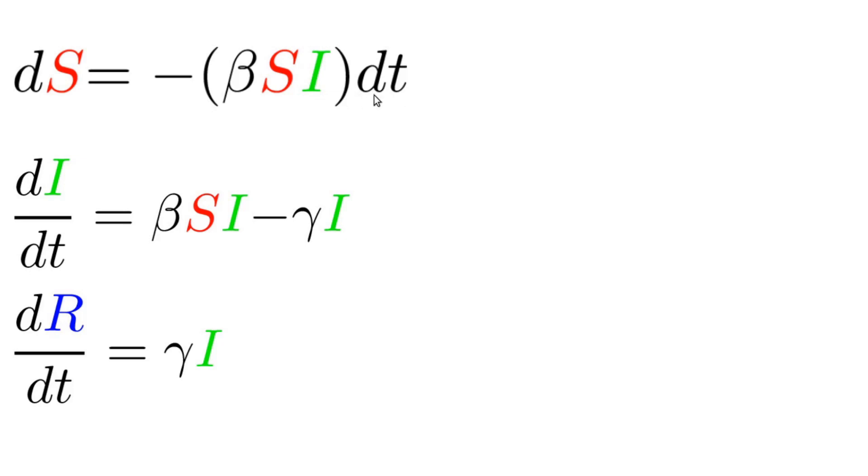It says that for a small change in time, we can predict what the small change in the susceptible population is. So as long as these changes are small, we can approximate this relationship by advancing a little bit in time, and then advancing the amount of change in the susceptible population. We can apply the same procedure to the other two equations.